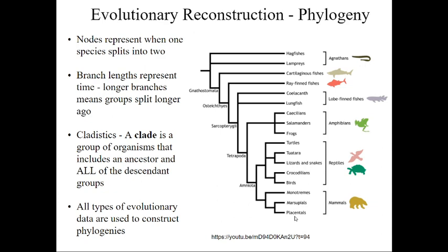Now would mammals be a clade? We've got an ancestor and the descendants. This is the monotremes — the egg-laying mammals like platypus. We've got the marsupials, which includes kangaroos and opossums. And then we've got placentals, which is pretty much everything else. So yes, that would be a clade.